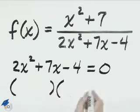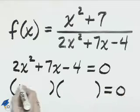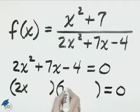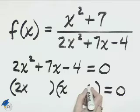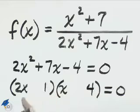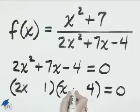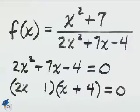By factoring, we'll have 2x and x for the first terms. And the factors of 4 that we'll use will be 4 and 1. 2x times 4 is 8, and that's positive 8x. This will be a negative 1x, so we'll end up with our positive 7x in the middle.